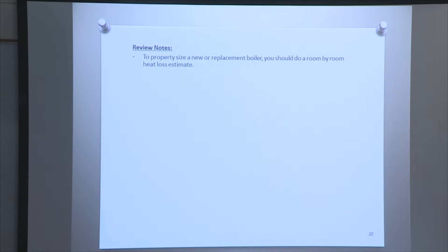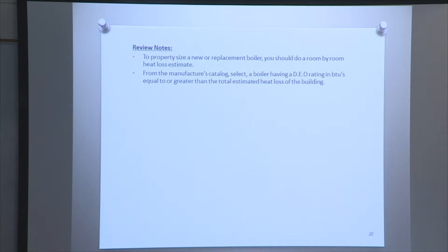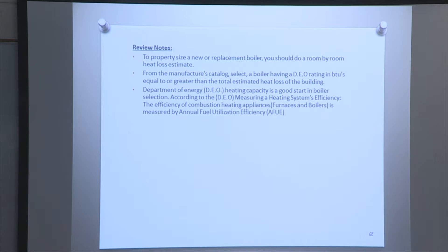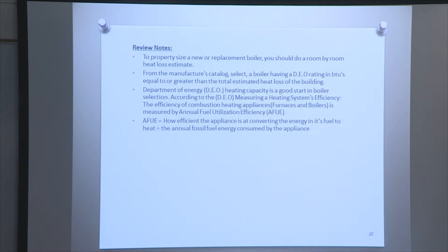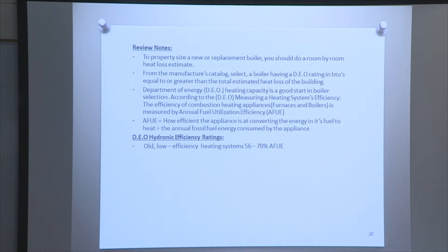Review notes: to properly size a new or replacement boiler, you should do a room-by-room heat loss estimate. From the manufacturer catalog, select a boiler having a DOE rating in BTUs equal to or greater than the total estimated heat loss of the building. Department of Energy heating capacity is a good starting point in boiler selection. According to the DOE, heating system efficiency — for furnaces, heating appliances, and boilers — is measured by the Annual Fuel Utilization Efficiency, AFUE. DOE hydronic efficiency ratings: low-efficient heating systems 56 to 70%, medium-efficient 80 to 83%, and high-efficient heating systems 90 to 98.5%.